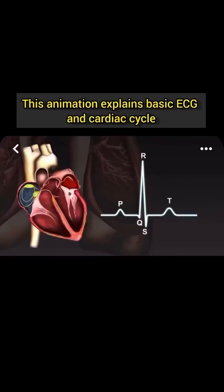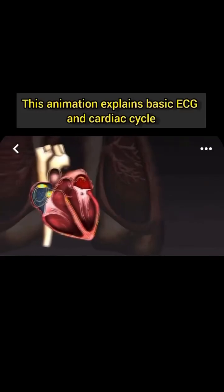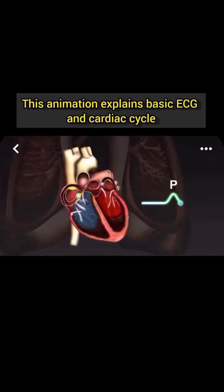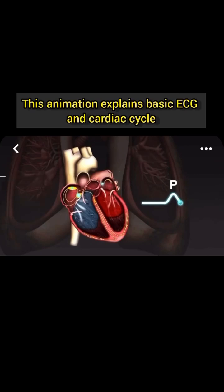This animation shows how the different ECG waves are produced during a cardiac cycle. The P wave is produced as the electrical impulse travels through the atria, causing them to contract. The P wave corresponds to atrial depolarization.